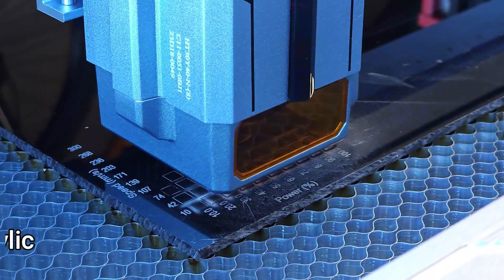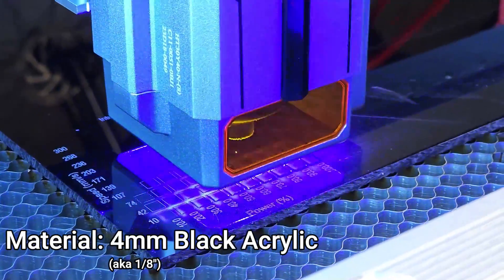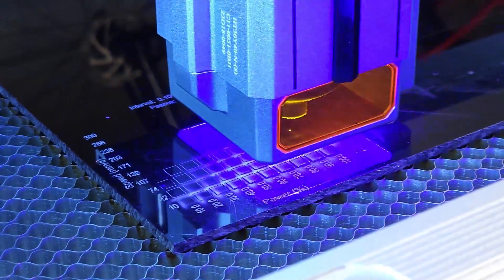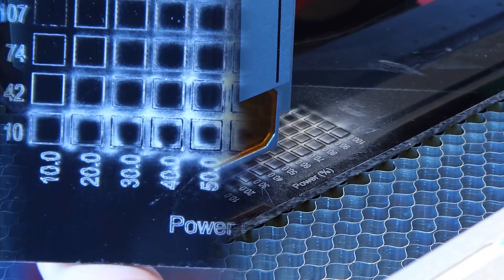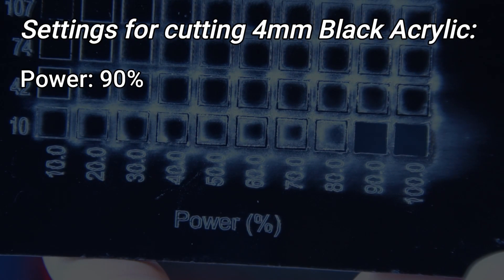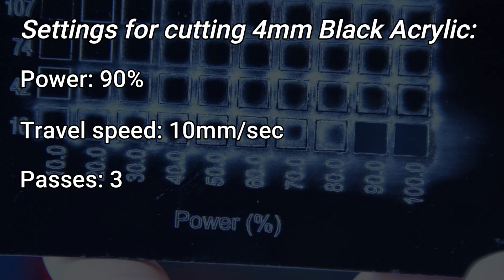The next material I tried cutting was 4mm black tinted acrylic. After several cut tests I determined the best settings were 90% power, 10mm per second travel and 3 passes.